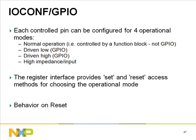GPIO pins are controlled through the register interface in the input-output configuration module. The pin can operate in normal operation controlled by the function block, be driven low, driven high, or held in high impedance. The register interface provides set and reset access methods for choosing the operational mode. At reset, functional pins are controlled by their subsystem modules, and GPIO-only pins (GPIO 0 to GPIO 20) are set as inputs.